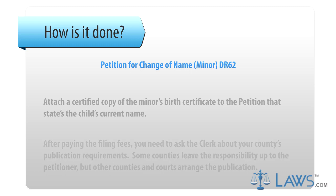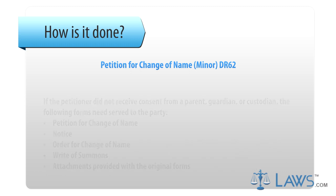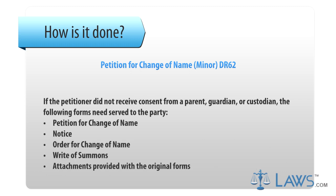Step 5. If the petitioner did not receive consent from a parent, guardian, or custodian, the following forms need to be served to the party: Petition for Change of Name, Notice, Order for Change of Name, and Right of Summons.